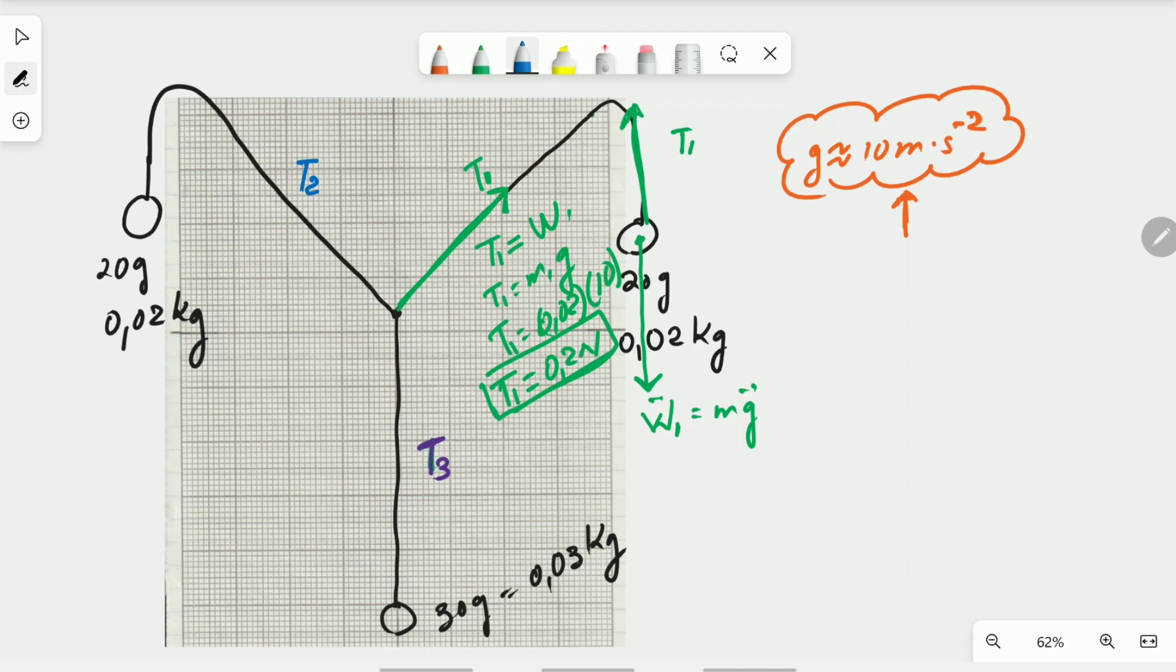And T2, because it is the same mass, will also be 0.2 newton, but the difference is that it is going to be pointed in that direction.